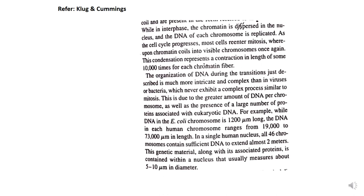According to Klug and Cummings, packaging or condensation of chromosomes is required in eukaryotes because eukaryotes are complex organisms with many cells. The total amount of DNA present in these cells is very high compared to prokaryotic cells, which is why it needs to be accommodated in a very small space inside the nucleus. You can refer to genetics textbooks for this topic.